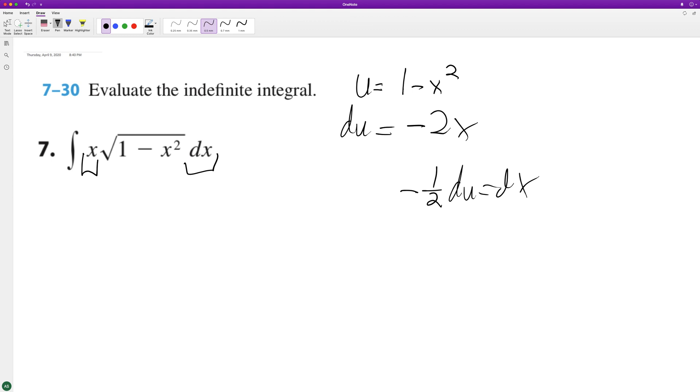Because negative one-half times negative 2 is just one, and then we just have the x left over.